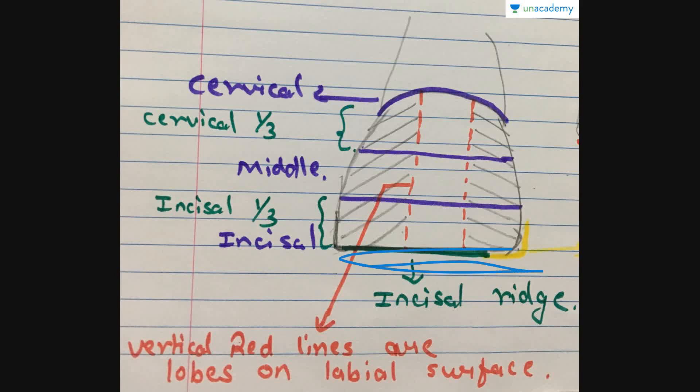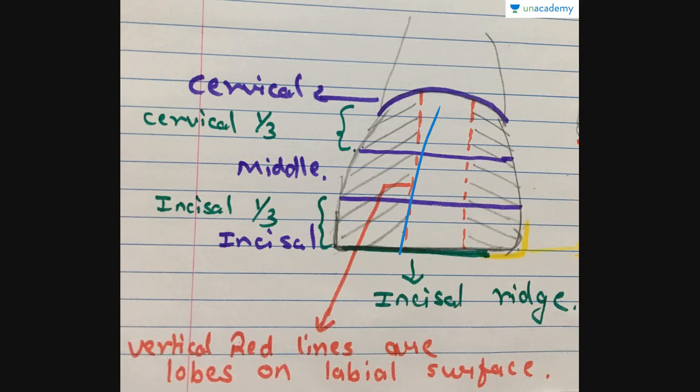This is your incisal ridge and this is your incisal angle, which is normally rounded in anterior teeth. The red lines shown are the lobes, which help in the formation of mammelons and cusps. This is the basic division of the crown.